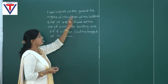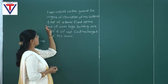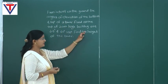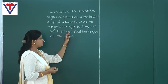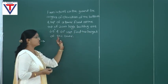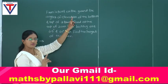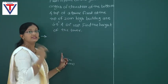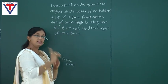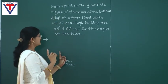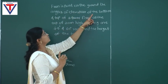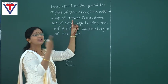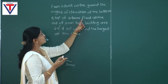From a point on the ground, the angles of elevation of the bottom and top of a tower fixed at the top of a 20 meter high building are 45 degrees and 60 degrees respectively. Find the height of the tower. We take a point P on the ground. The angle of elevations of the bottom and top of the tower are observed from point P.